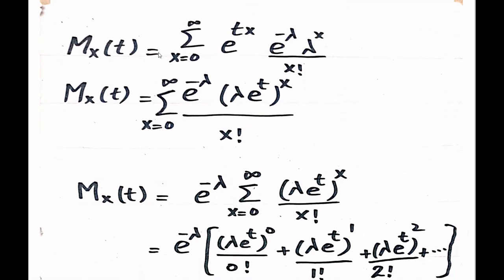The moment generating function equals the sum from x = 0 to infinity of e^(tx) · e^(-λ) · λ^x / x!. Notice that e^(tx) and λ^x have a similarity — we can combine them as (λ · e^t)^x, since e^(tx) · λ^x = (λe^t)^x.